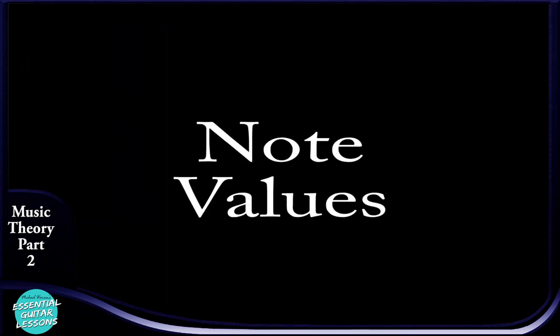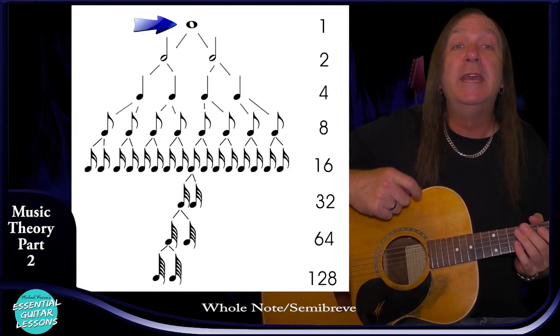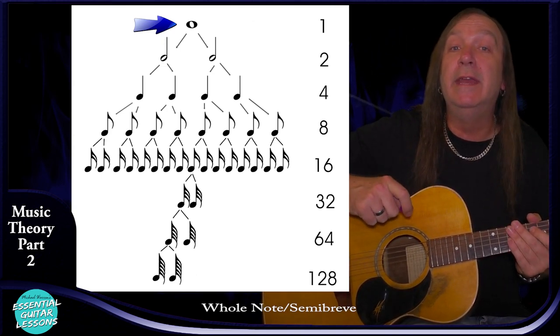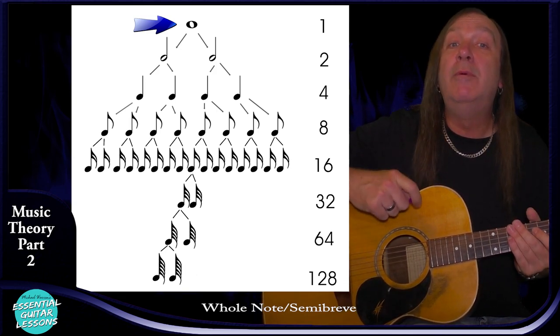Each note has a value — how many beats it holds for. It's best to think about this like a pizza, and we'll be breaking that pizza up into smaller and smaller parts. We'll put a number next to each group and this number will tell us how many times each group of notes goes into a whole note. So we have a whole note — just a circle with nothing in the middle — also called a semibreve. Think of it like a whole pizza, and we'll put a 1 next to that.